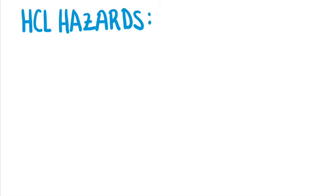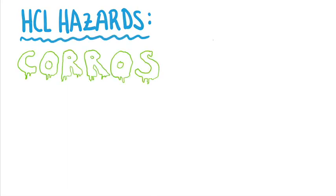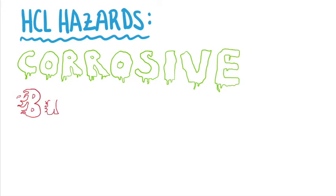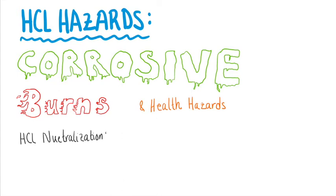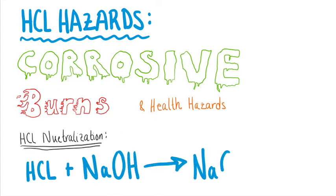The reaction of ethylene dichloride and ammonia produces ethylene amines and hydrogen chloride. There are many hazards associated with hydrogen chloride, the main ones being it is corrosive to the skin and mucous membranes and can cause serious burns. So to neutralize the product hydrogen chloride, sodium hydroxide is introduced to the process, producing sodium chloride and water.